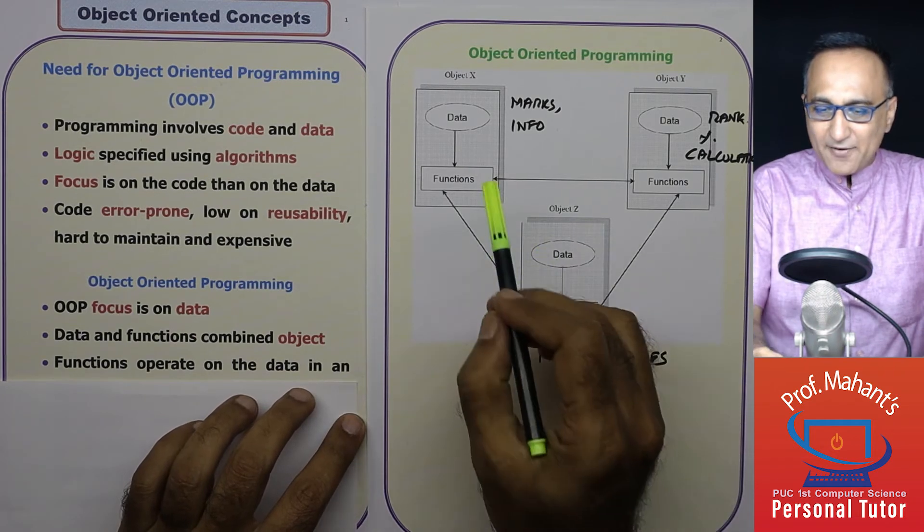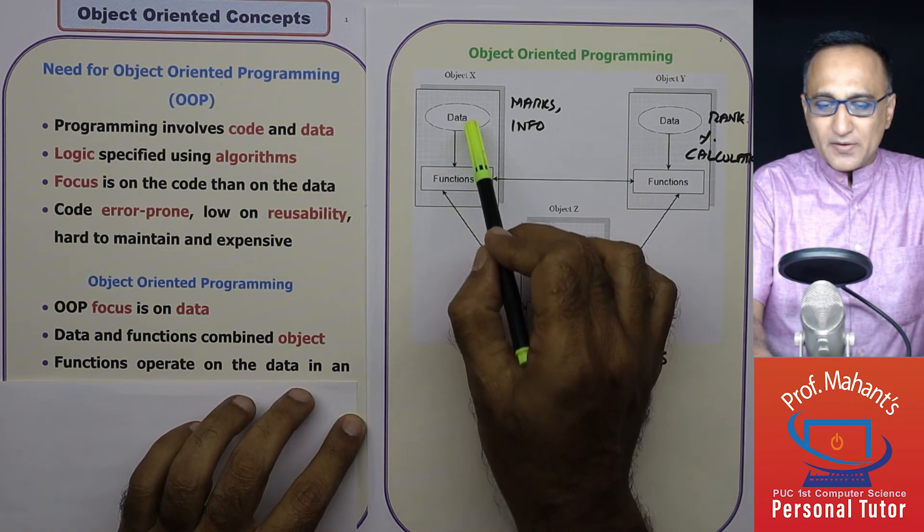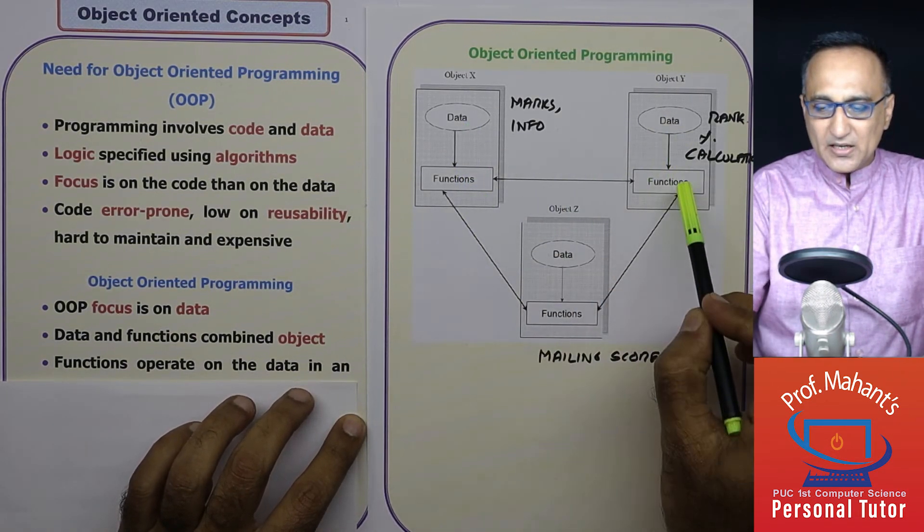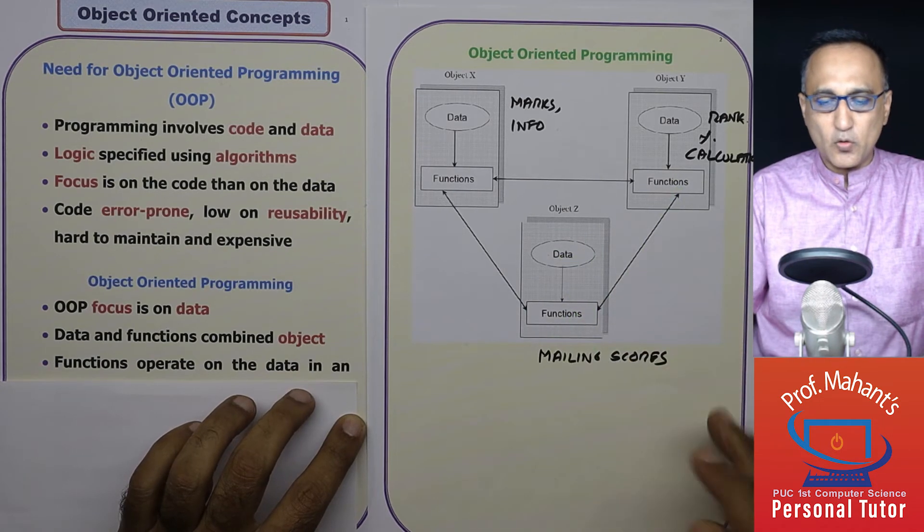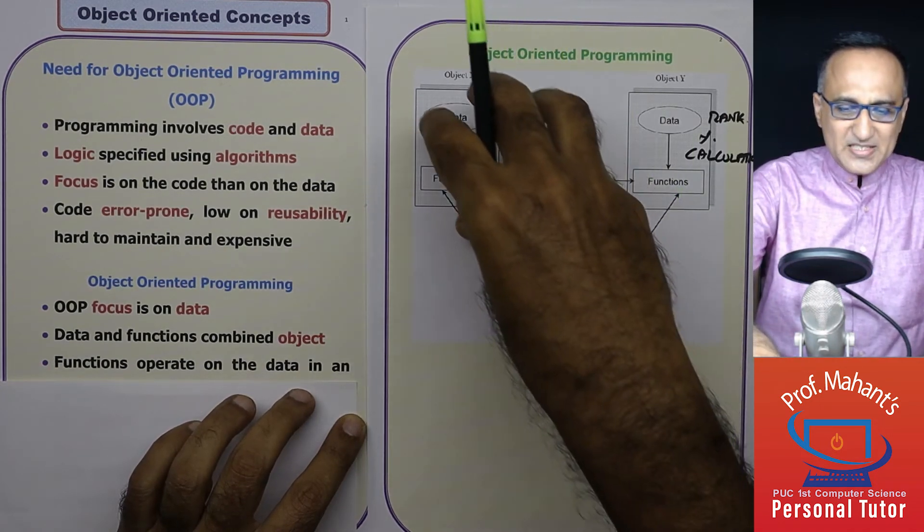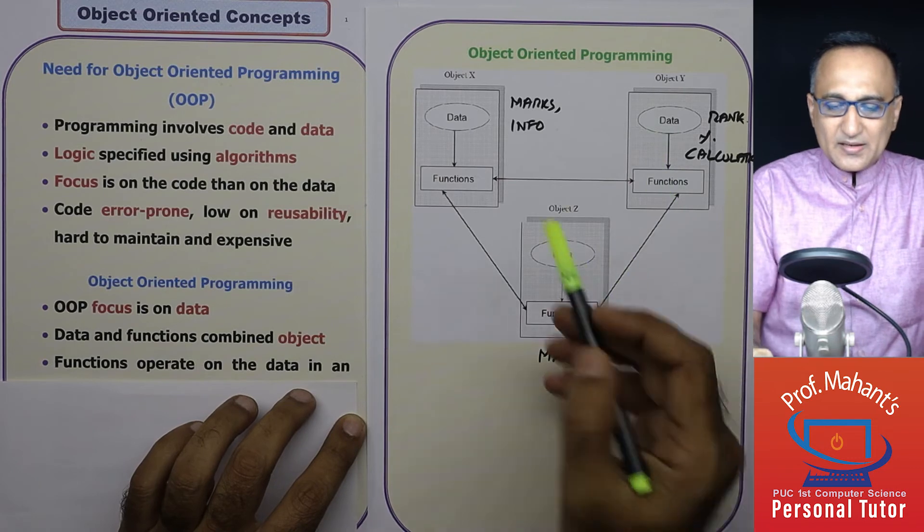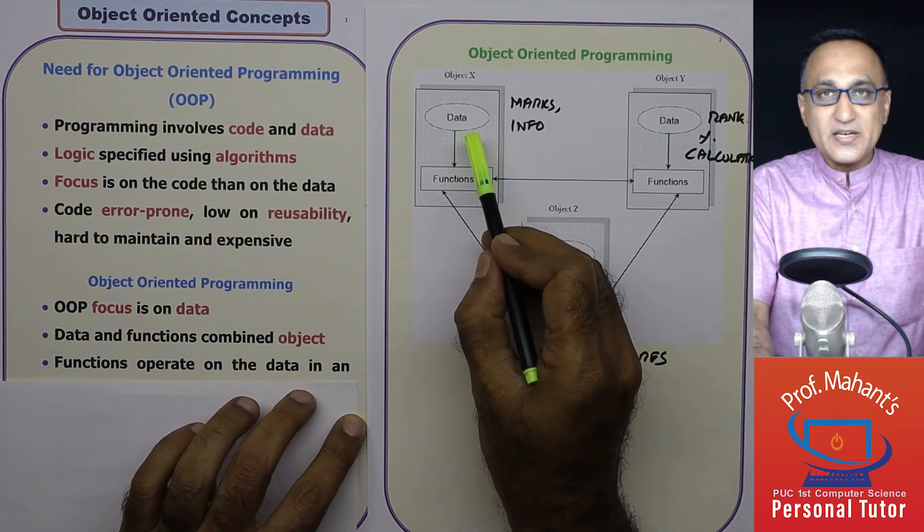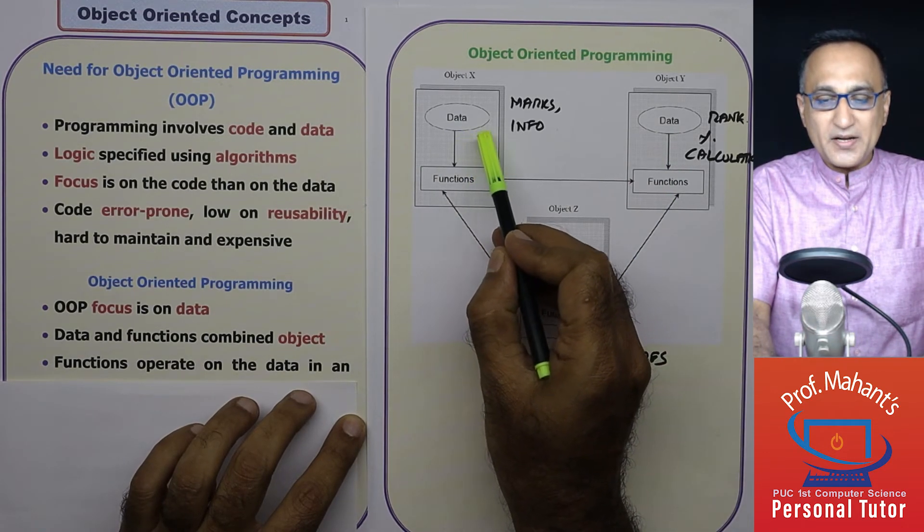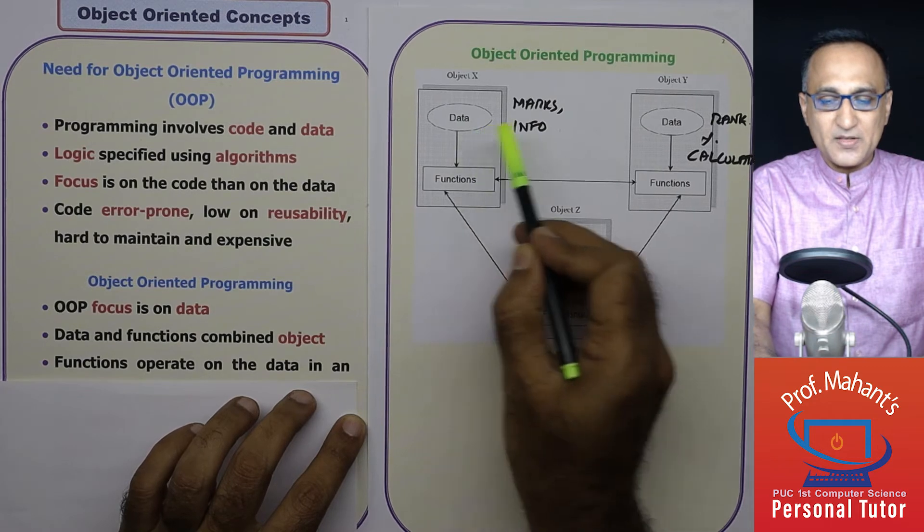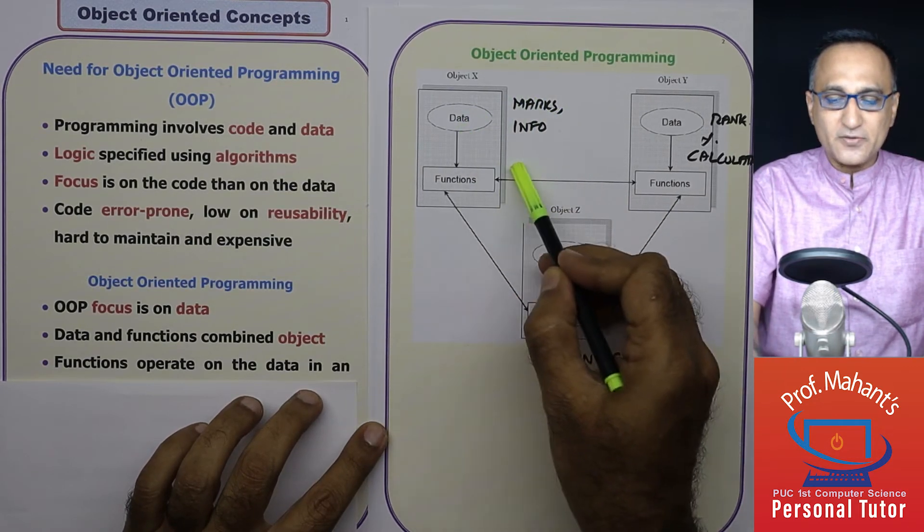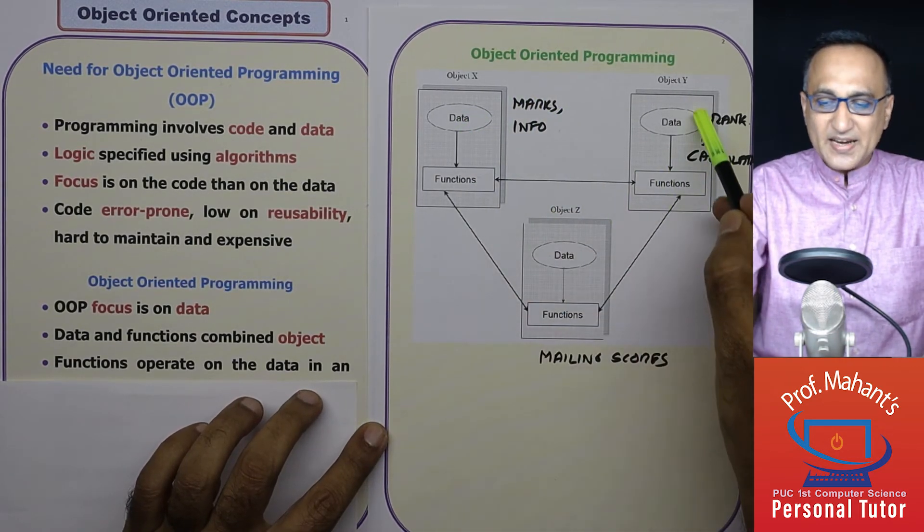So let me tell you what is the object through an example. So here if you see, I have three groups of data, code, data, code, data and code. Let us say in the first grouping, the data is of all the students name, address, age, weight and marks of each subject. So this is marks plus information of the student.